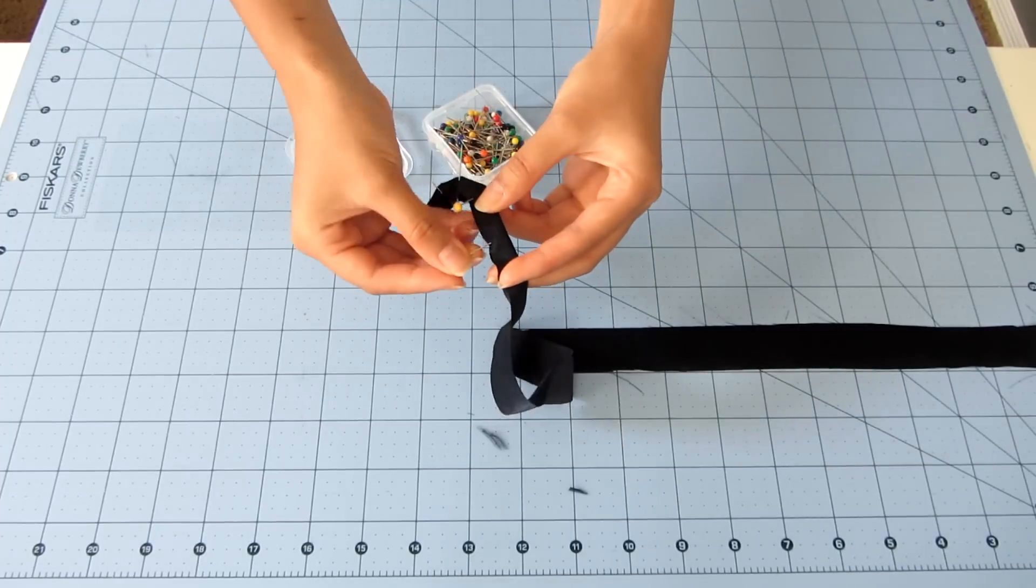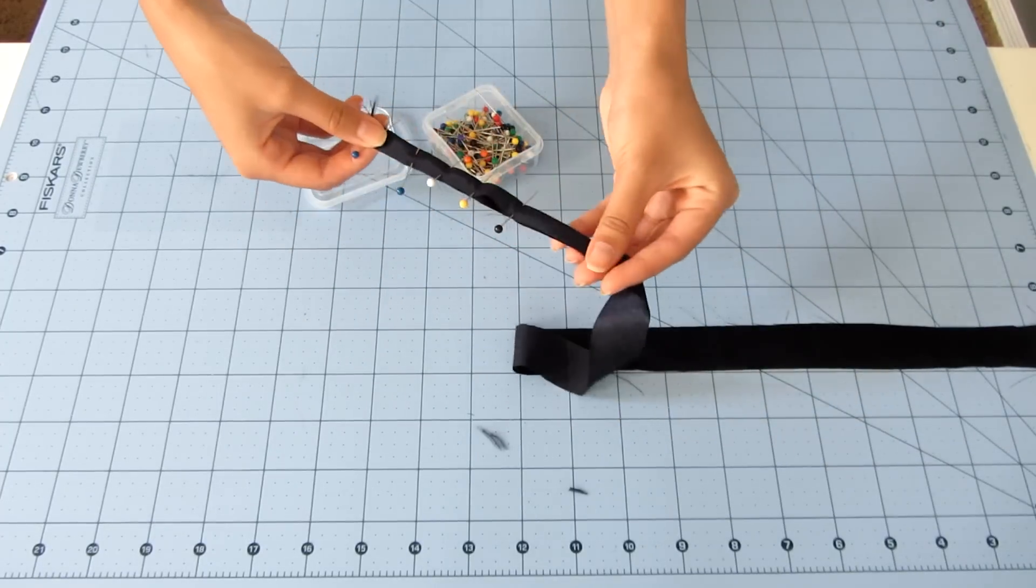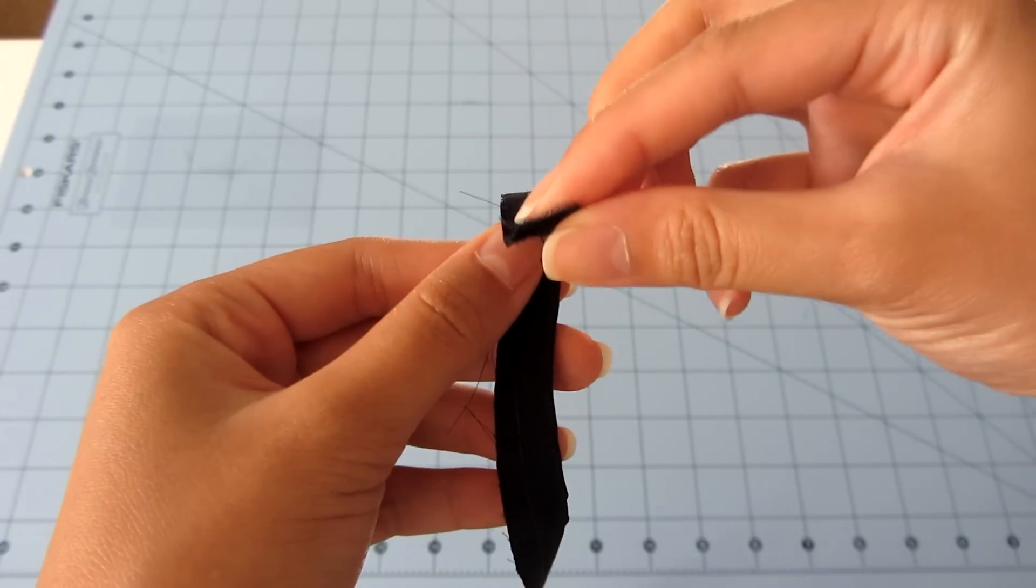Next, I fold the strip in half lengthwise with the right sides together and sewed using a straight stitch. To turn it inside out, fold one end a little bit and snip the corner that's away from the seam allowance.